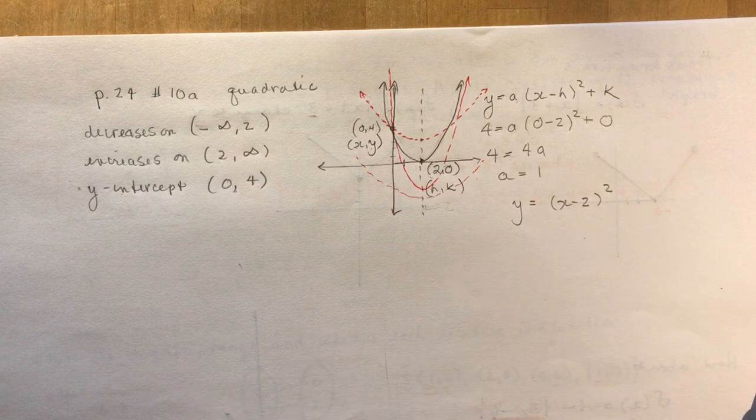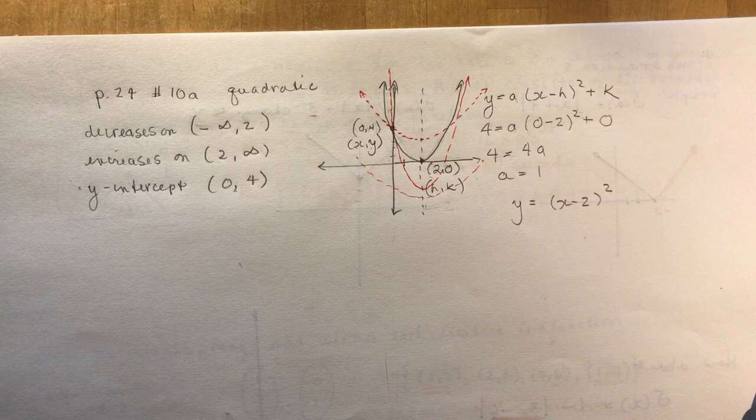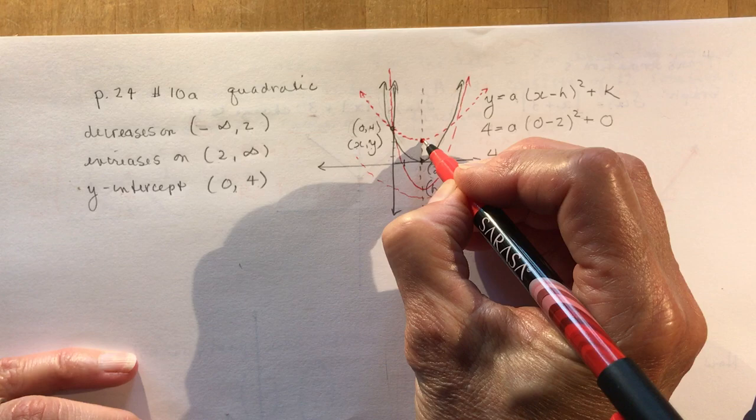Now, if you were asked to give another equation, could you do that? Well, sure. You could say, okay, what if the vertex was at, let's say right here, let's say it was 2 and 2.